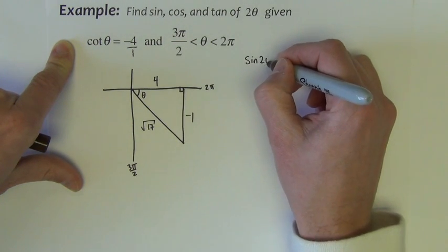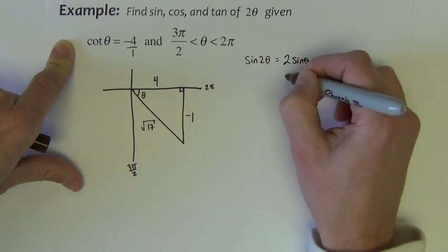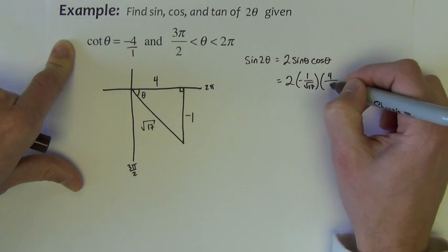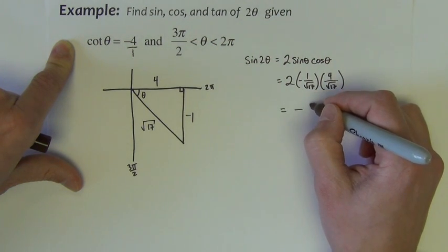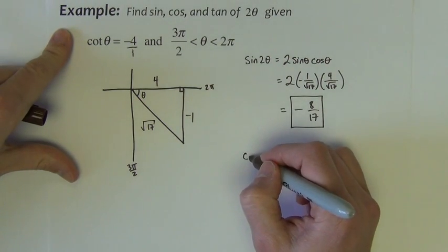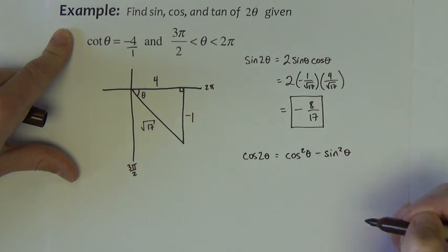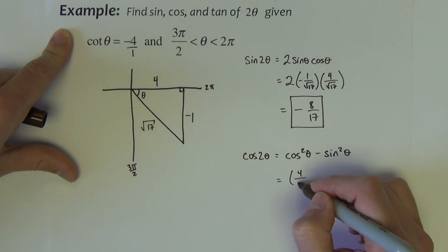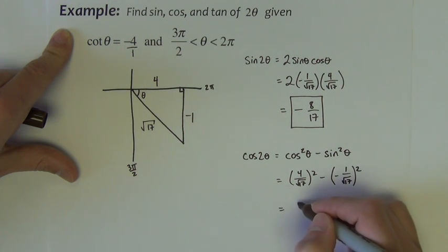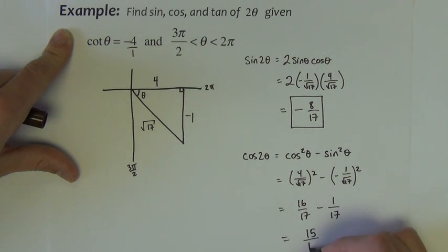So, the sine of 2 theta is, again, the formula is 2 sine cosine. So, it's 2 times the sine, which is negative 1 over the square root of 17, times the cosine, which is 4 over the square root of 17. That becomes negative 8 over 17. And next, the cosine 2 theta. I'm going to use the identity cosine squared minus sine squared. Cosine squared would be 4 over the square root of 17 squared minus sine is negative 1 over the square root of 17 squared. This is 16 seventeenths minus 1 seventeenths, so we get 15 seventeenths.